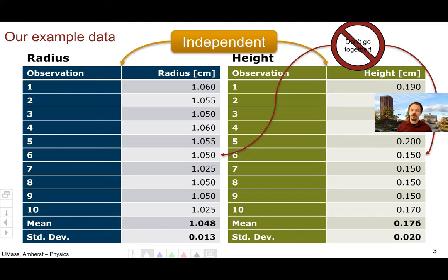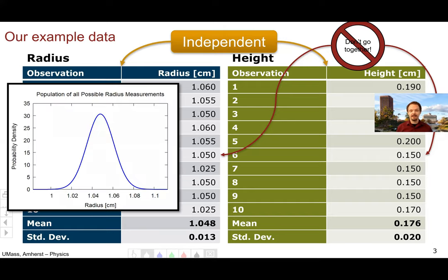Going back to our assumptions, we're assuming that the radii — all the possible values of this continuous variable — fill out a normal distribution with a mean of 1.048, under our assumption that the mean of our sample is a good estimate of the mean of the population, and a standard deviation of 0.013, under the assumption that the standard deviation of our sample is a good estimate of the standard deviation of our entire population.